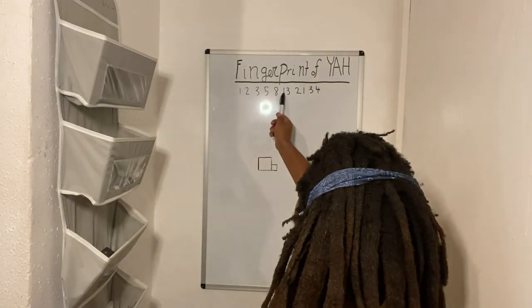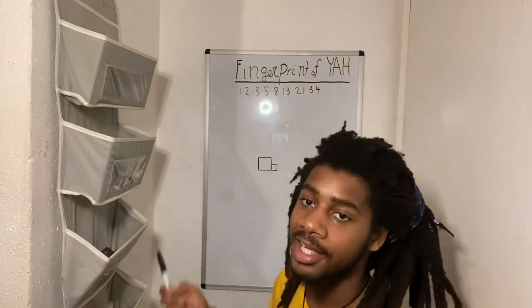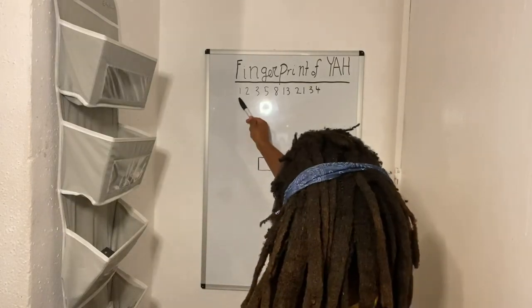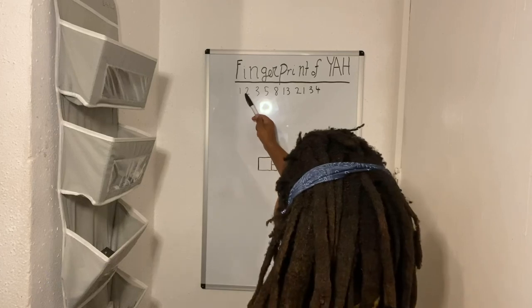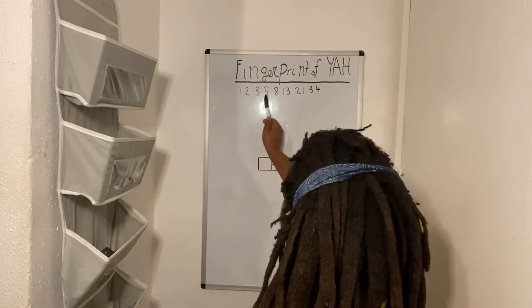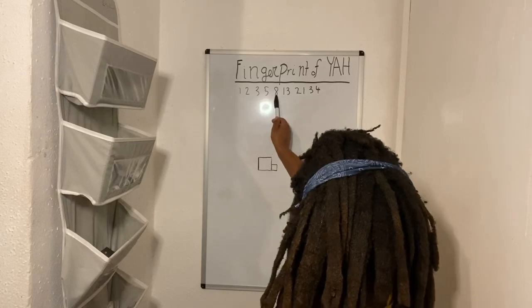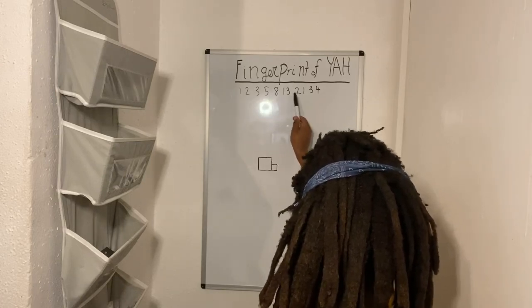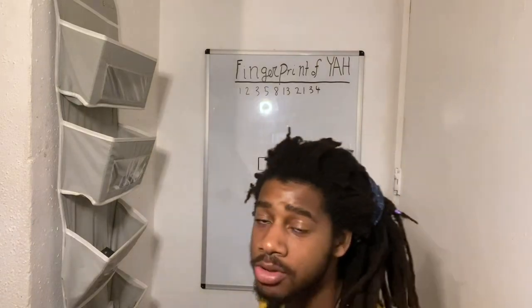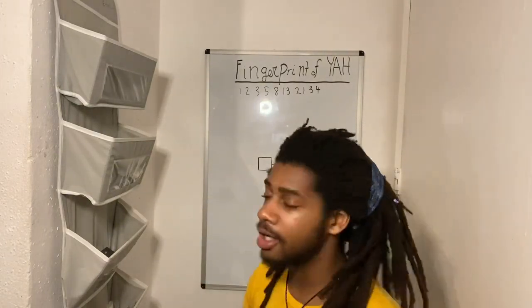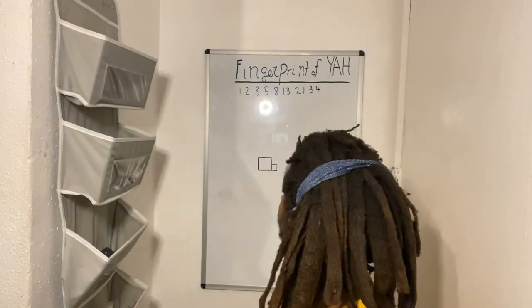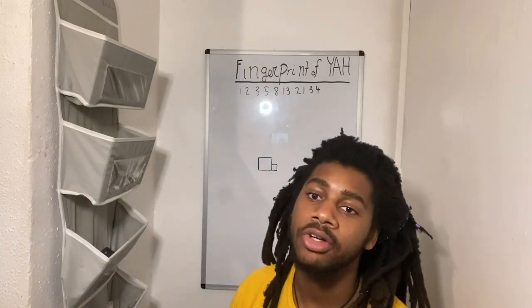Here is the fingerprint of Yah — here's the sequence: 1, 2, 3, 5, 8, 13, 21, 34, and it keeps going on into infinity, it never stops. One plus one is two, two plus one is three, three plus two is five, five plus three is eight, eight plus five is thirteen, thirteen plus eight is twenty-one, twenty-one plus thirteen is thirty-four. It goes on into infinity. All you're doing is adding the last two numbers together to produce the next number in the sequence.